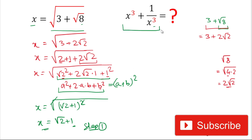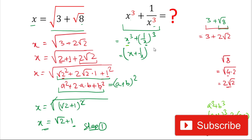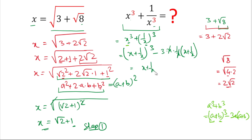Now we simplify the expression x cubed plus 1 over x cubed. It is in the form of a cubed plus b cubed. The formula for a cubed plus b cubed is a plus b whole cubed minus 3ab times a plus b. Here a equals x and b equals 1 over x. So we can write x plus 1 over x whole cubed minus 3 times x times 1 over x times x plus 1 over x. Since x and 1 over x cancel, this becomes x plus 1 over x whole cubed minus 3 times x plus 1 over x.